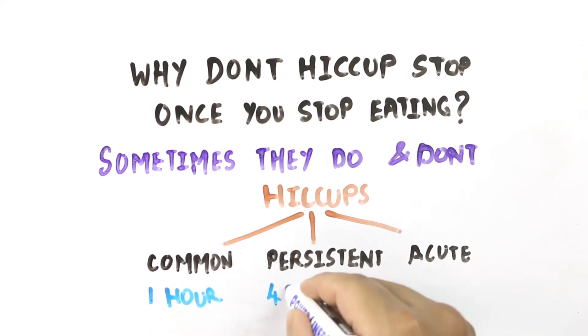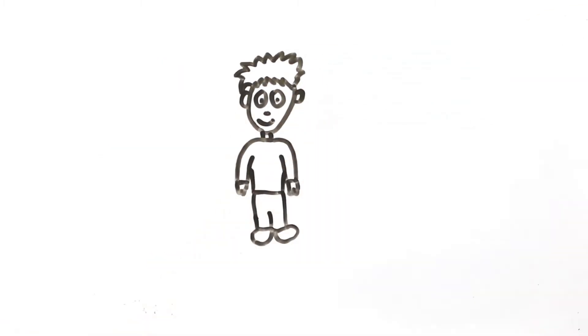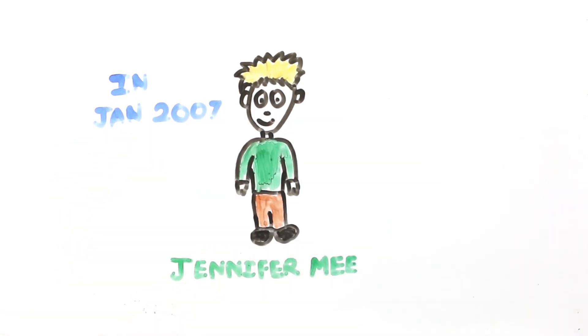Acute hiccups go on for more than 48 hours and are usually caused by drugs, but they can also occur naturally. For example, in January 2007, a teenager from Florida named Jennifer Mee hiccuped for 5 weeks straight for no known reason.